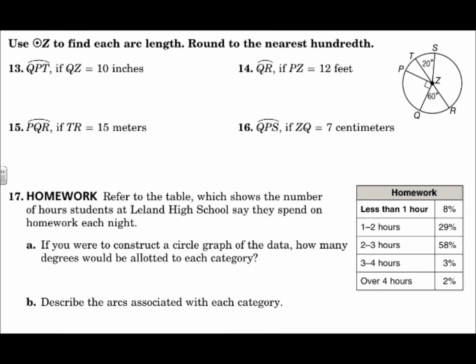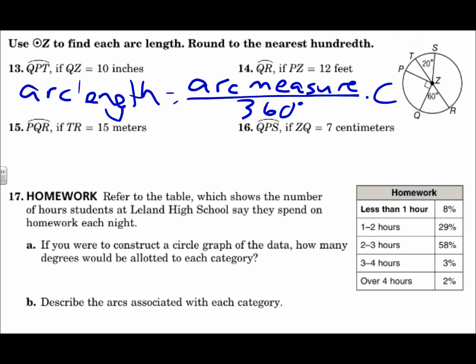Use circle Z to find each arc length, round to the nearest hundredth. Arc length has a formula. It's equal to the arc measure divided by 360 degrees times the circumference. Arc length and arc measure are different. Arc measure of this arc here, arc QR, the measure is 60 degrees. It's like the angle measure. The length is as if you were to take a ruler and measure the distance from Q to R. Arc length is distance. Arc measure is like an angle measure.